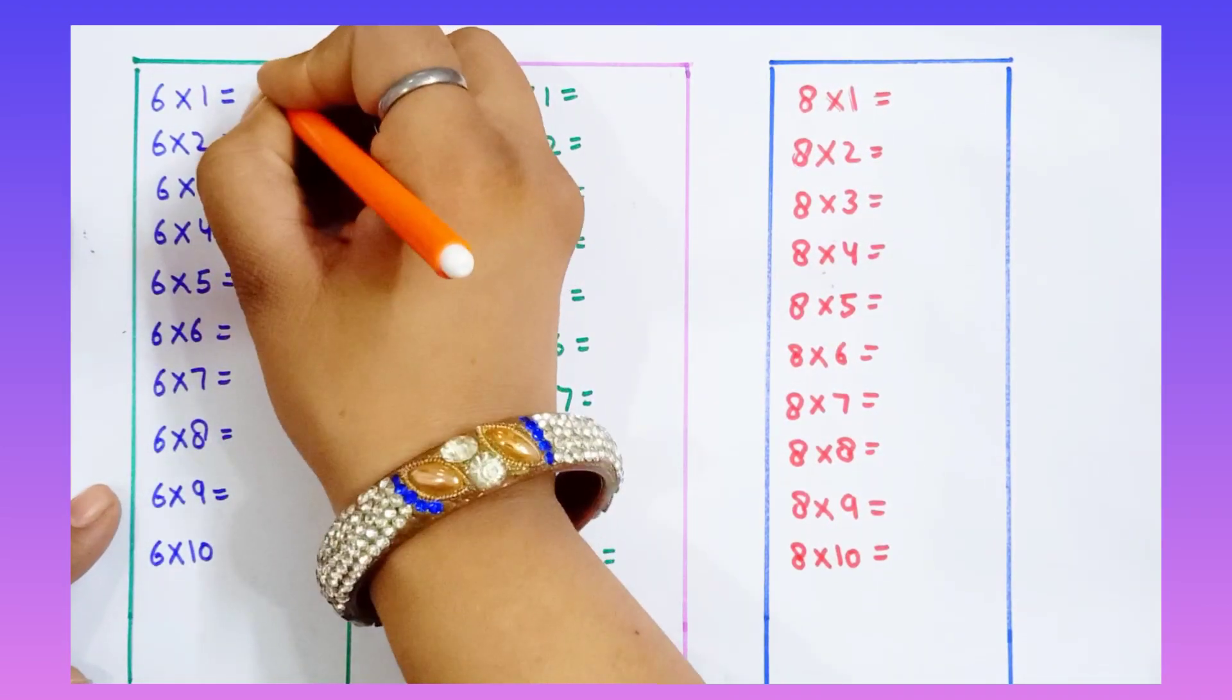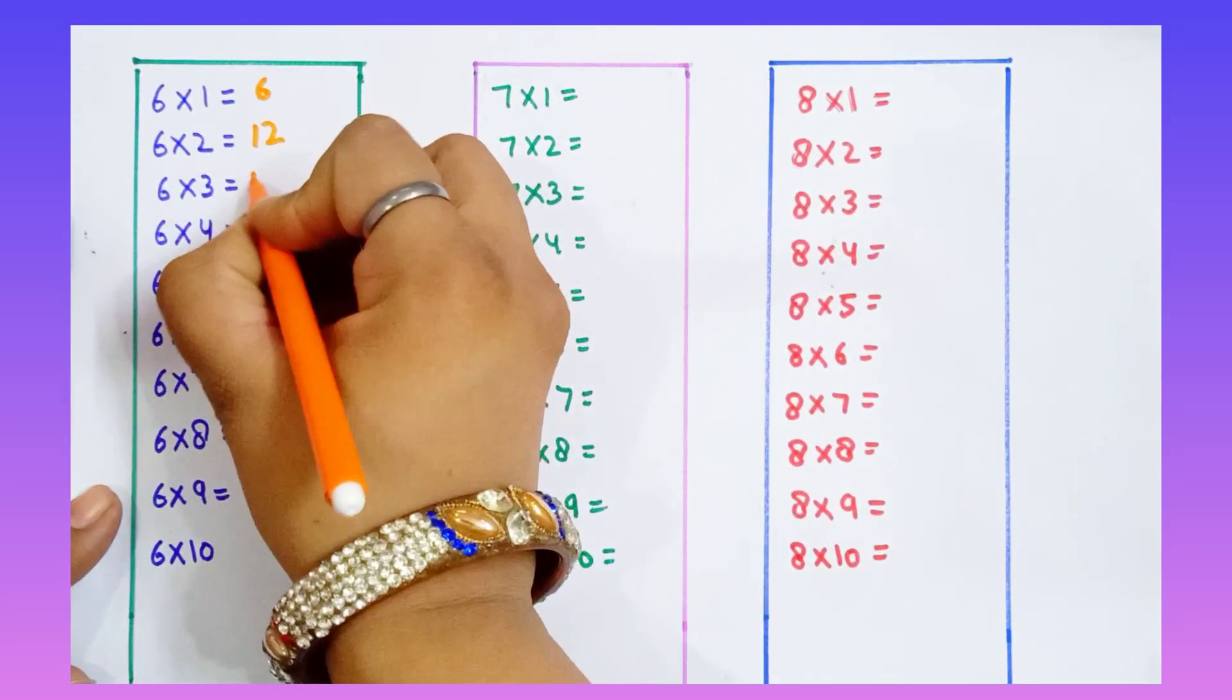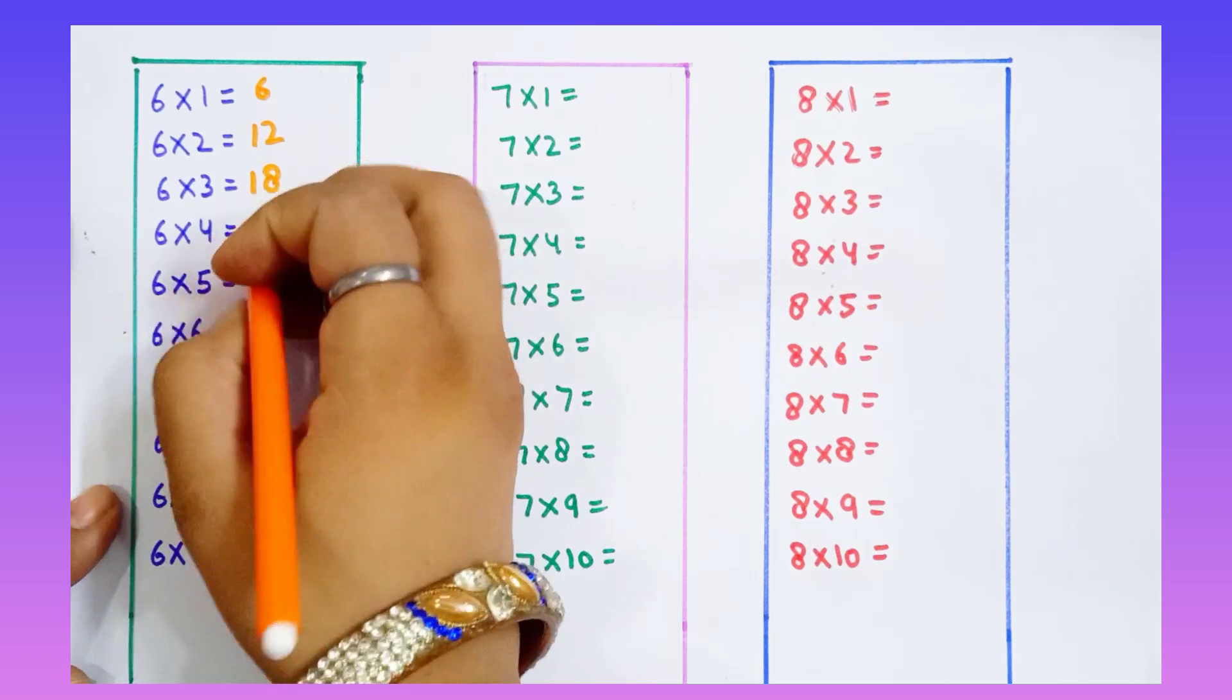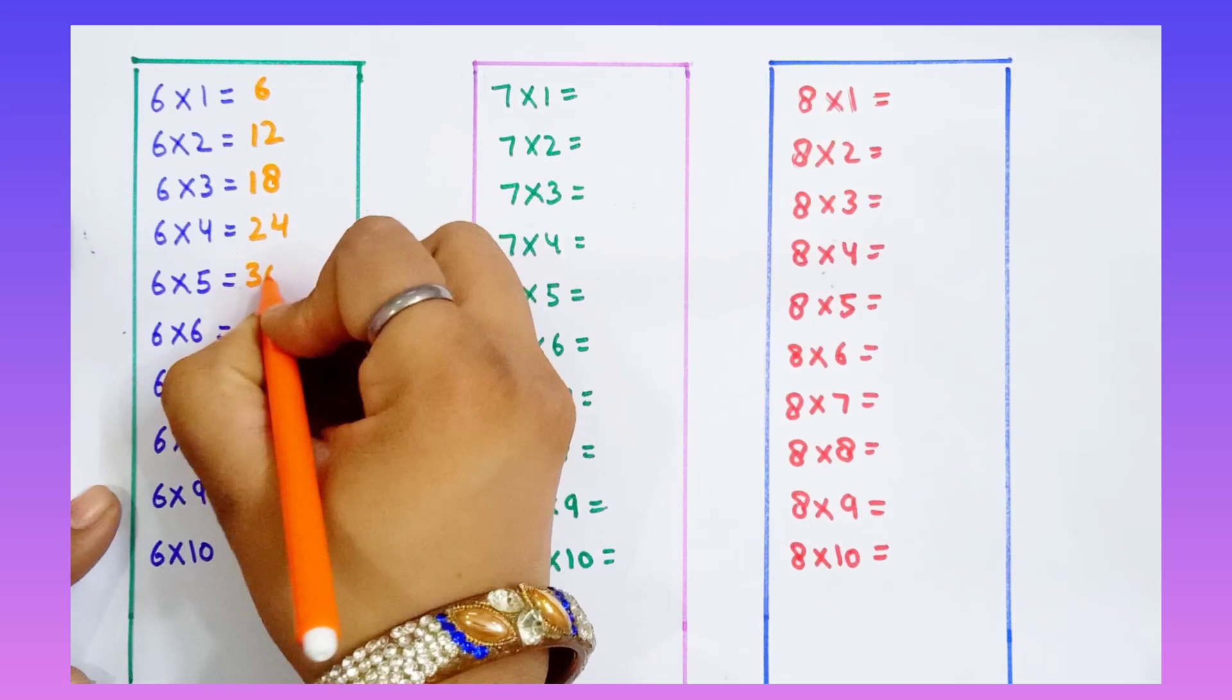6 ones are 6. 6 twos are 12. 6 threes are 18. 6 fours are 24. 6 fives are 30.